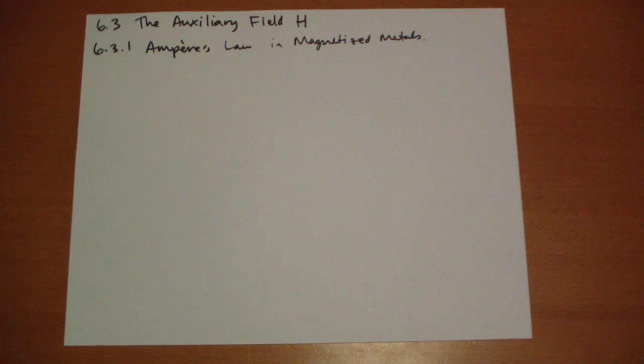Hi, this is Jonathan Gardner. We're in section 6.3 of Griffith's Introduction to Electrodynamics. Here we get to introduce the auxiliary field H, which is analogous to the D field in electrostatics and matter.